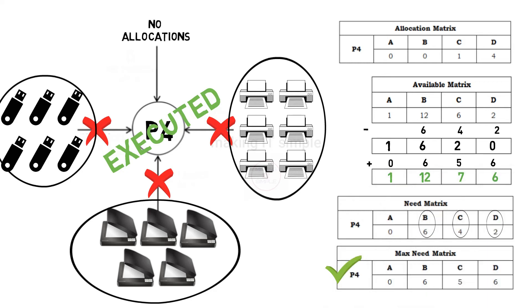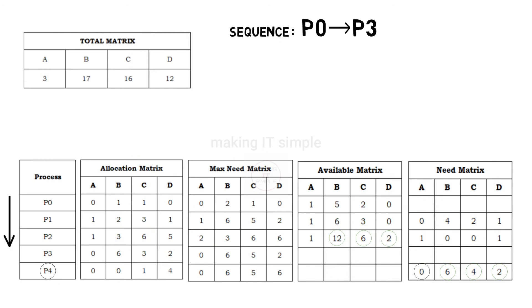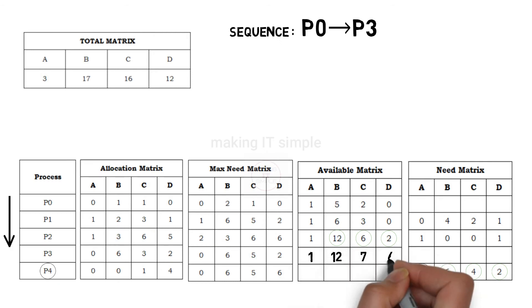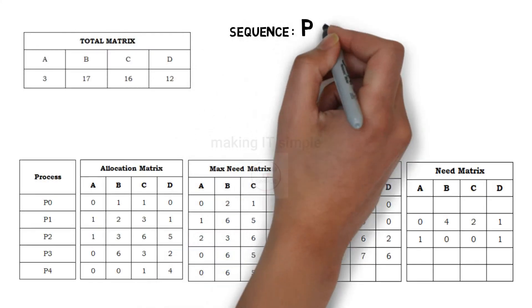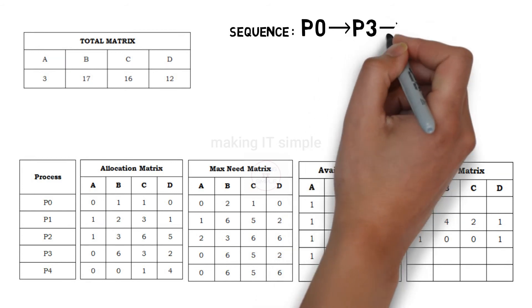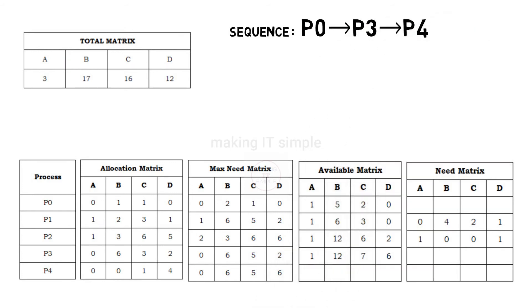So now the updated matrices will be as follows, available resources will get updated. P4's need is completed. P4 will get added to the sequence after P3. Now as we got to the bottom of the table, we need to start from the top. Let us check process P1.